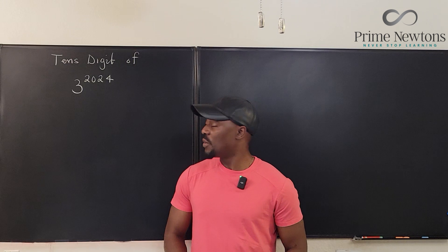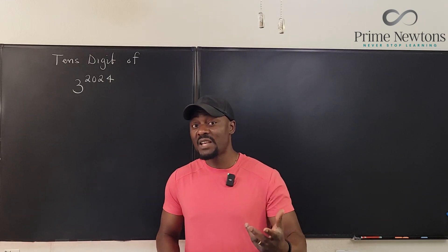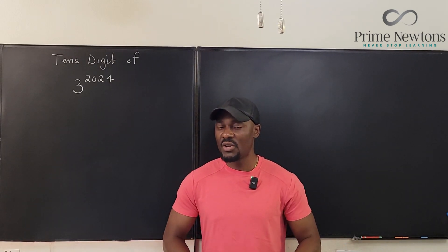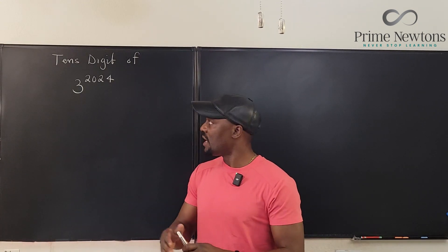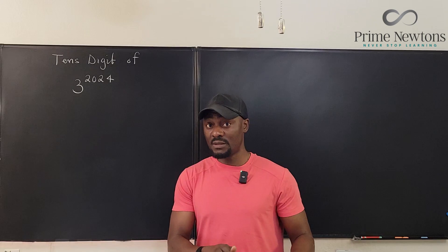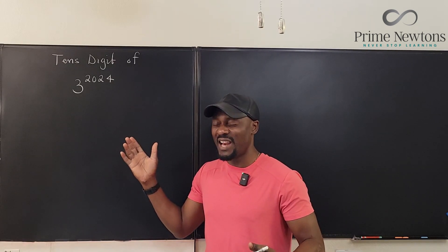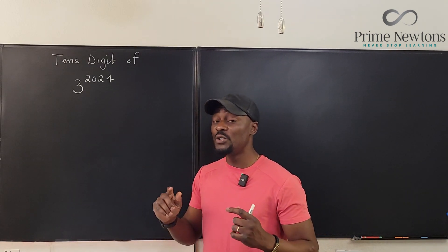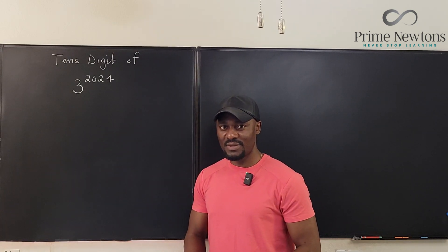Welcome to another video. We want to find the tens digit of 3 raised to the power 2024. Because we're being asked to get the tens digit, we have to find the last two digits, since the first of those last two would be our answer. Whenever you're dealing with the last two digits of any big number, that means if you divide it by 100, the remainder gives you the last two digits. This number has about 966 digits if you write it out, so we're going to use Euler's totient function and some basic multiplication.